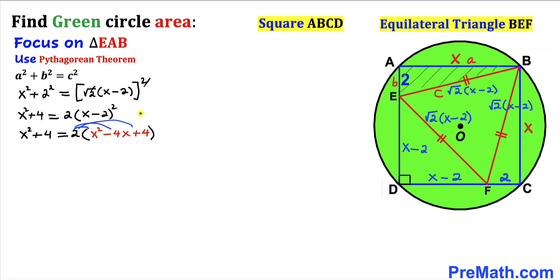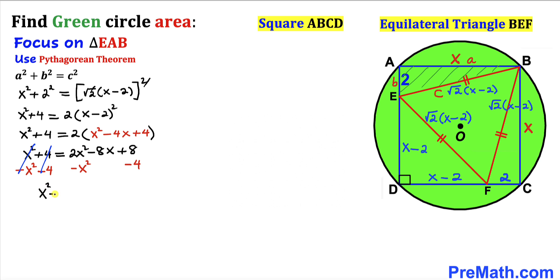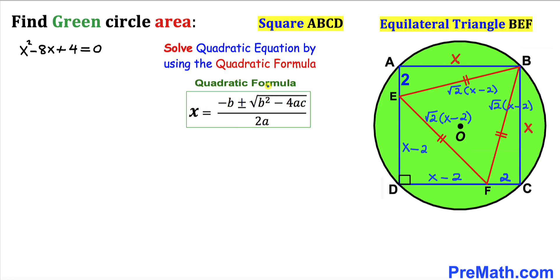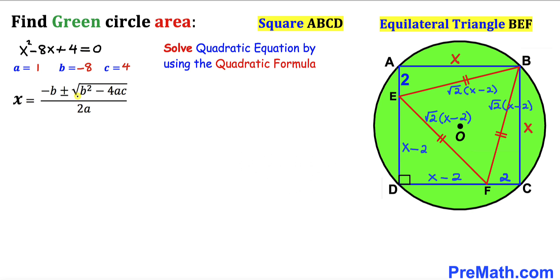Distributing gives x² + 4 = 2x² − 8x + 8. Subtracting x² from both sides, we get the quadratic equation x² − 8x + 4 = 0. We'll solve this using the quadratic formula with coefficients a = 1, b = −8, and c = 4.